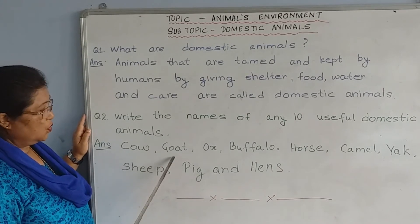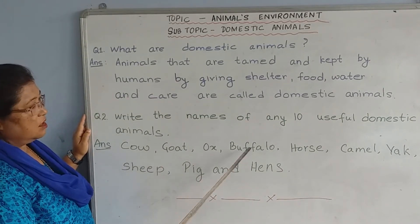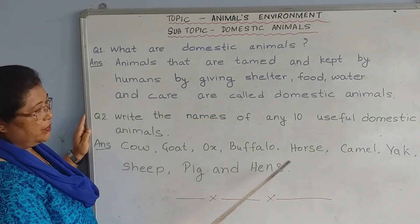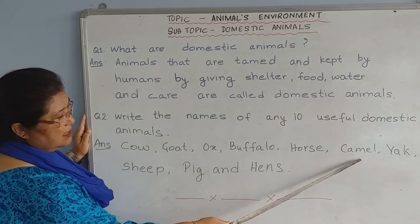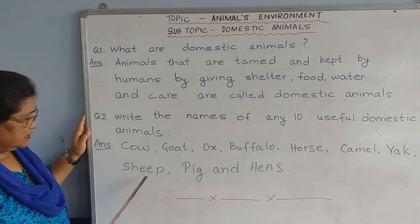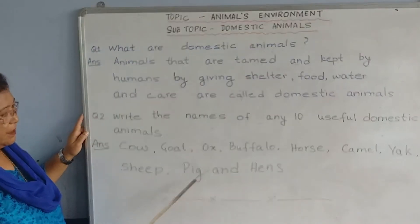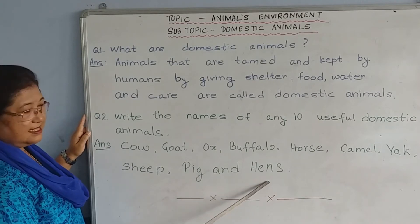The ten useful domestic animals are: cow, goat, ox, buffalo, horse, camel, yak, sheep, pig and hen.